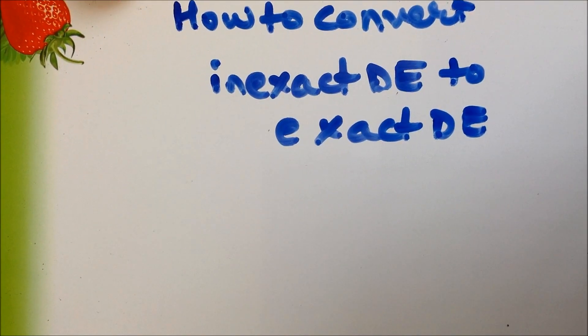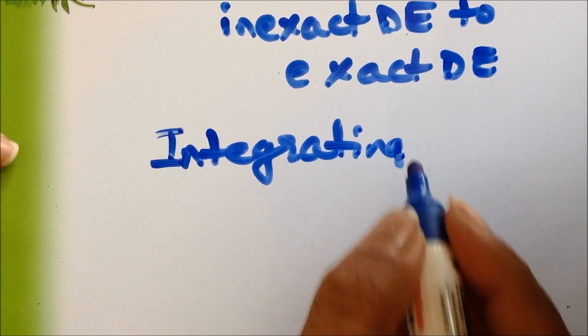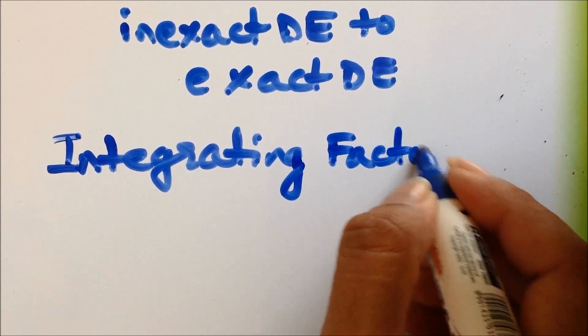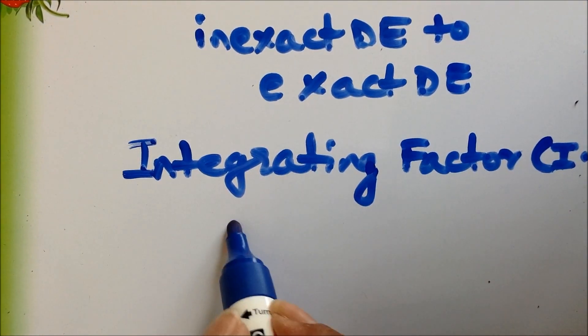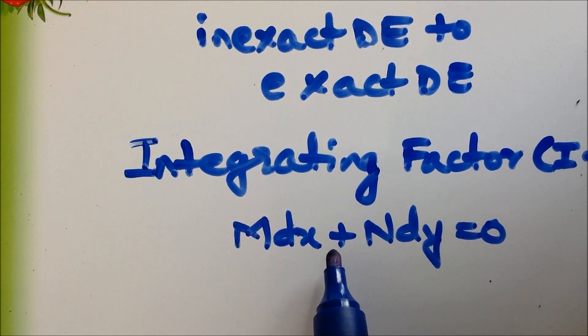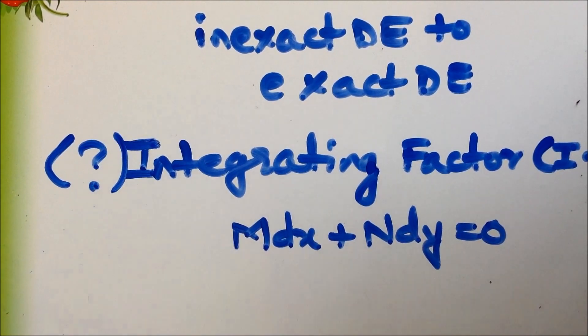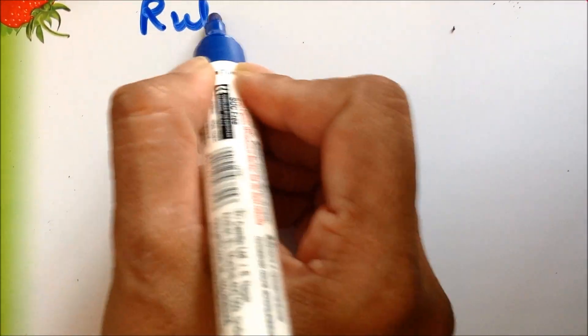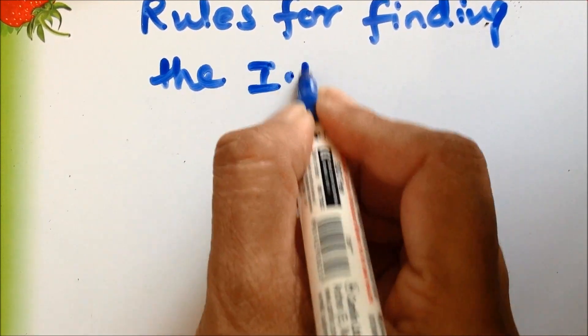For this, we find something called an integrating factor — in short, we just call it IF. This integrating factor is multiplied to the equation M dx plus N dy equals 0. And once we multiply it, this inexact equation gets converted to the exact differential equation. So now the question is how to find this particular integrating factor. For finding it, there are some rules, and we shall see them one by one.